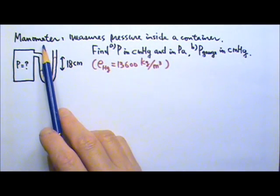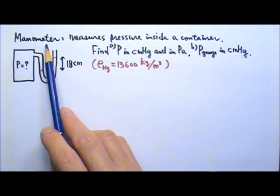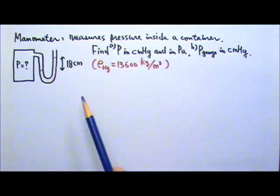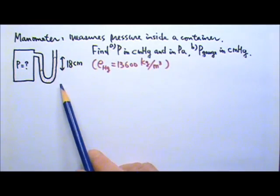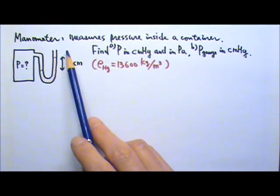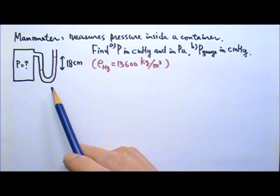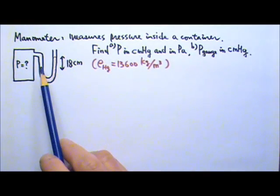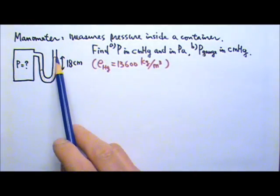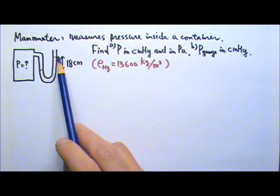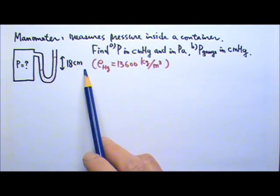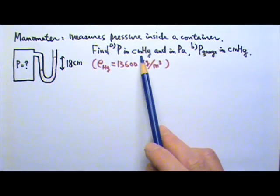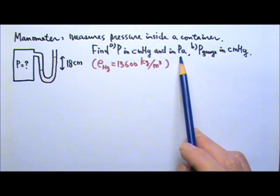A manometer is another kind of pressure gauge, used to measure the pressure inside a container. A classic manometer is a U-shaped tube with some mercury inside. When connected to this container, the mercury column looks like this with a height difference of 18 centimeters. Find the pressure inside the container in centimeter mercury and in pascals.